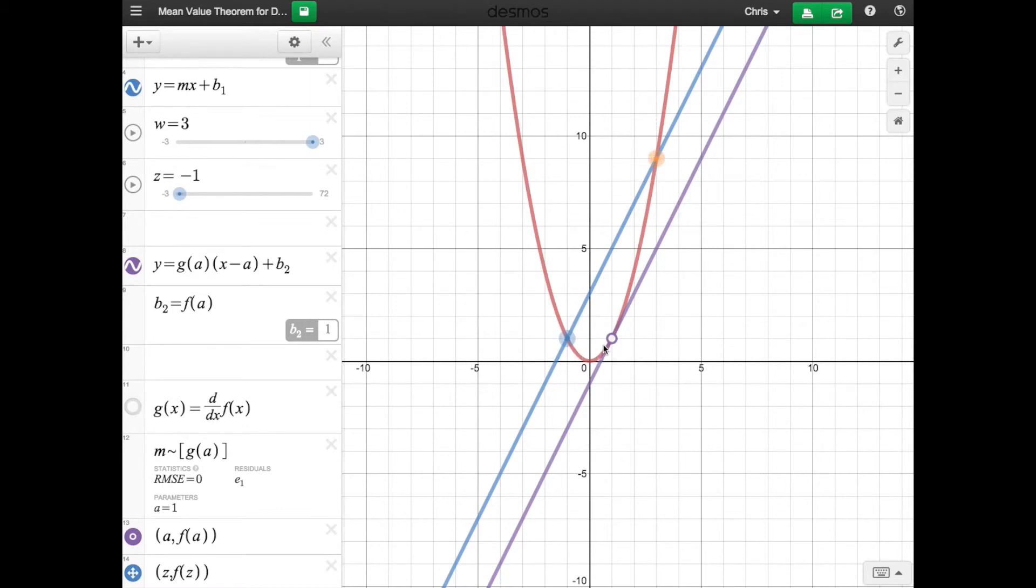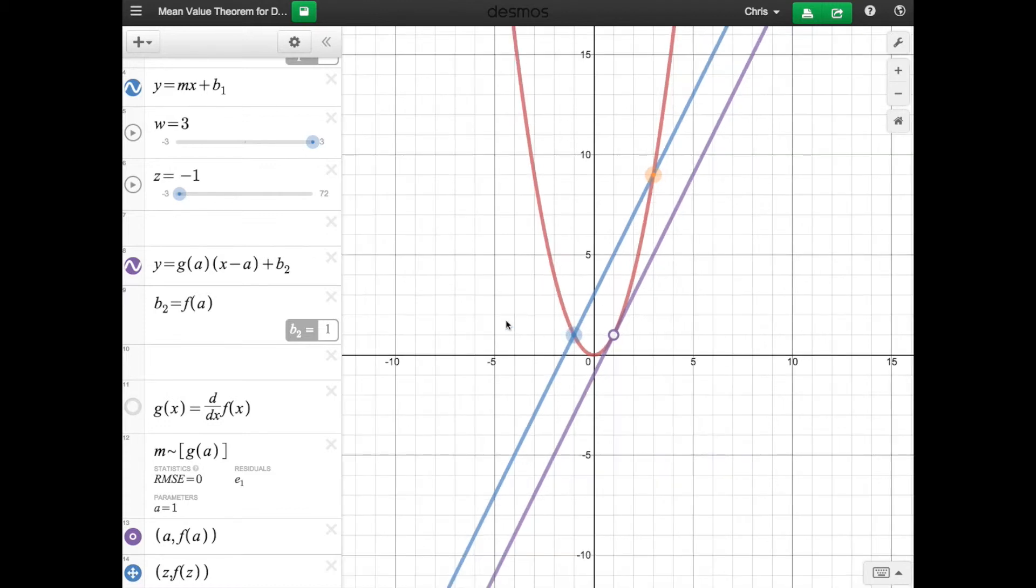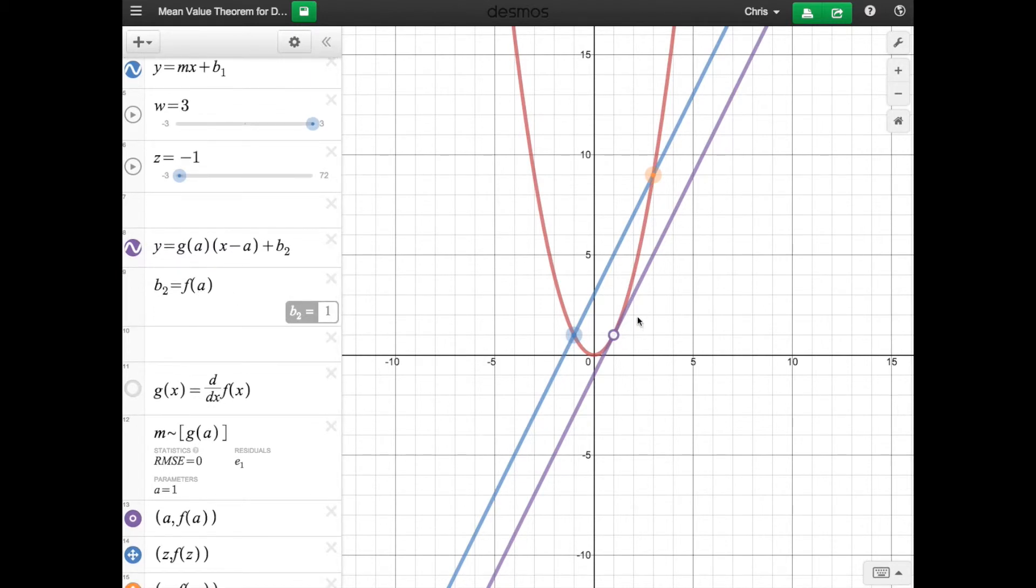So in between these two points, this point right here has the exact same slope as this right here. Not only does it do that, I also have it where it finds the b of that tangent line as well.